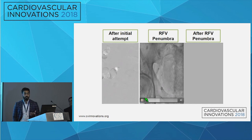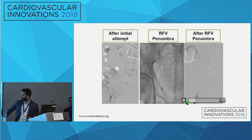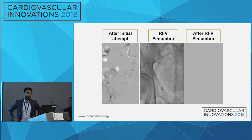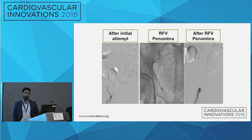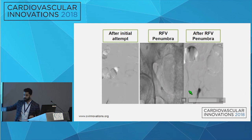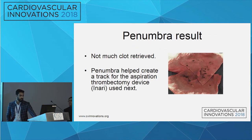We then did another round of Penumbra through the right femoral vein — you have to be careful here because it's a pretty large French system and you don't really use a guidewire, so you don't want to damage the blood vessel. After this attempt, you can see some change, but again, not much. This is the clot we retrieved with the Penumbra — not much, with four-by-fours shown for perspective.